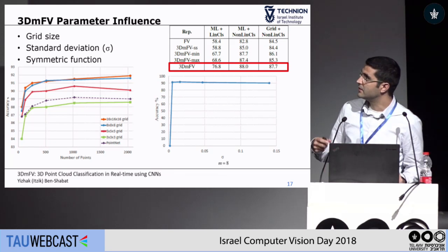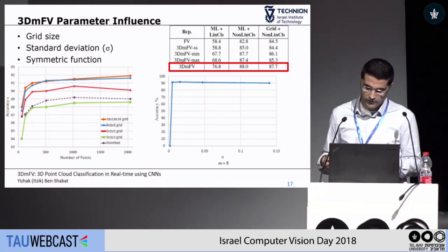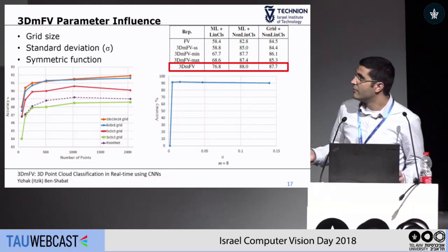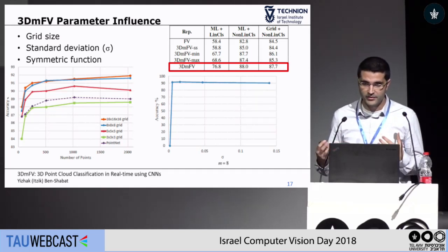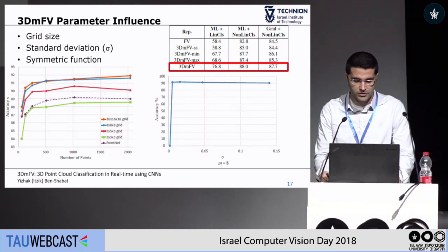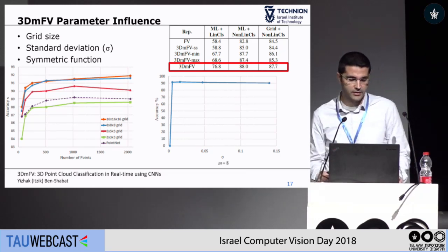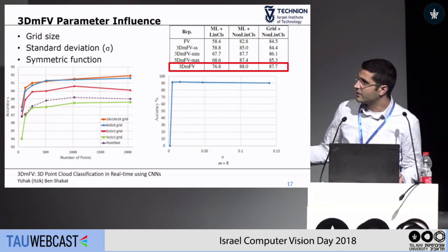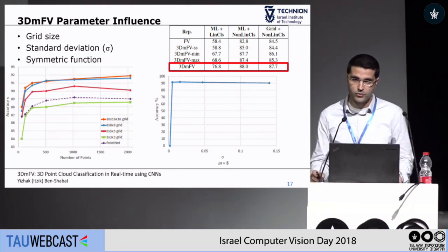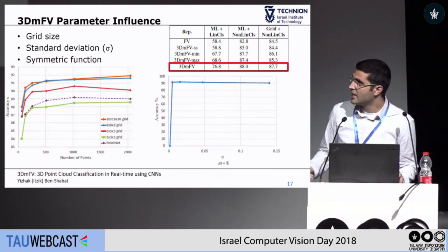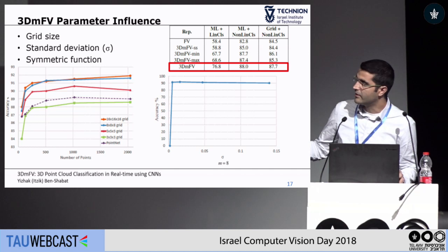We wanted to explore how different parameters affect the algorithm. First, we checked how grid size affects performance. We tested from a very coarse 3×3×3 Gaussian grid up to a 16-cube Gaussian grid, measured against the number of points. You can see that the more Gaussians we use, the better the results, until performance somewhat saturates between the 8 and 16 versions. For comparison, we show the PointNet results.